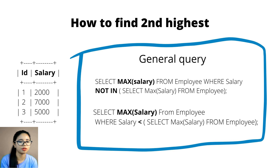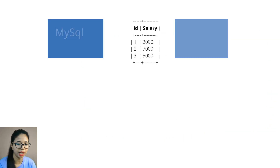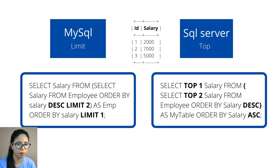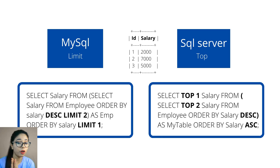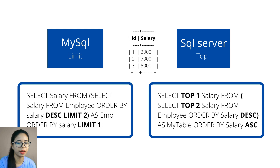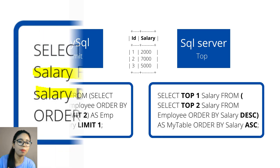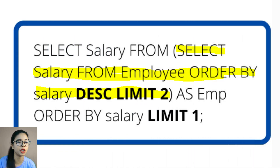Now let's see the other approaches. MySQL and SQL Server have their own specific keywords. For MySQL, you can solve this question using LIMIT, and for SQL Server you can solve it using TOP. For MySQL: SELECT salary FROM (SELECT salary FROM employee ORDER BY salary DESC LIMIT 2).